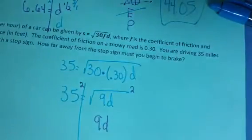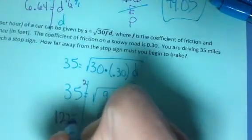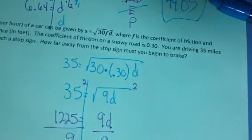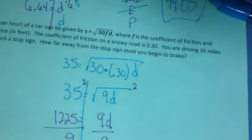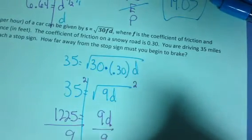I'm going to square that side. On the calculator, I'm squaring 35, and I get 1225. Now to get D by itself, I'm going to divide by 9. On my calculator, I'm taking 1225 and dividing it by 9, and I get 136.11.